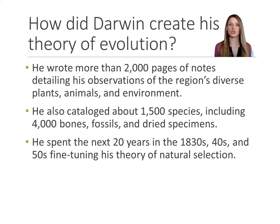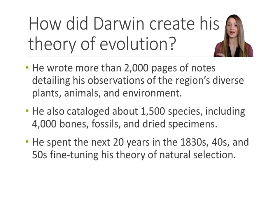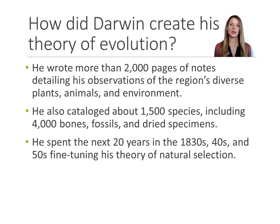When the crew would stop at different locations, Darwin would get off the boat and just explore the area. He took with him a journal and took more than 2,000 pages of notes throughout his trip. He looked at plants, animals, the geography, the geology. He looked at the formation of land as well as the content of that land. He ended up cataloging 1,500 different species and collected over 4,000 bones, fossils, and dried specimens.